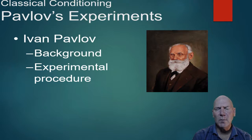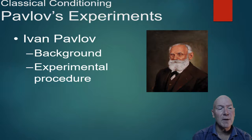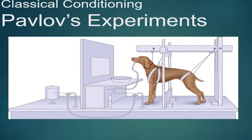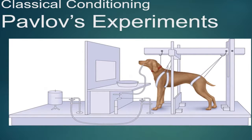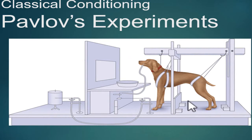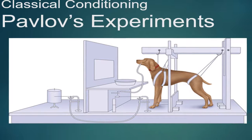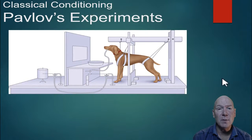Pavlov's experimental procedure was prompted by his observation of the dog salivating at the sound of footsteps. He set up an apparatus with a test tube attached to the dog's salivary gland to measure saliva output. Using this setup, he administered different tones and sounds to see if those would become associated with food and cause the dog to salivate.